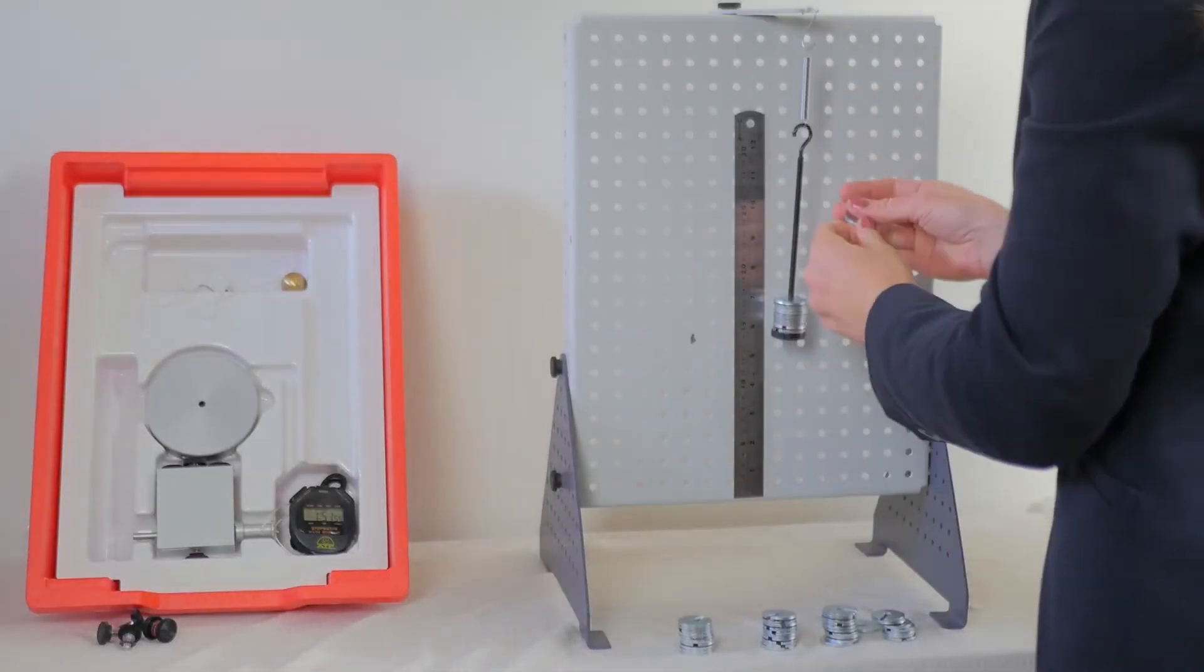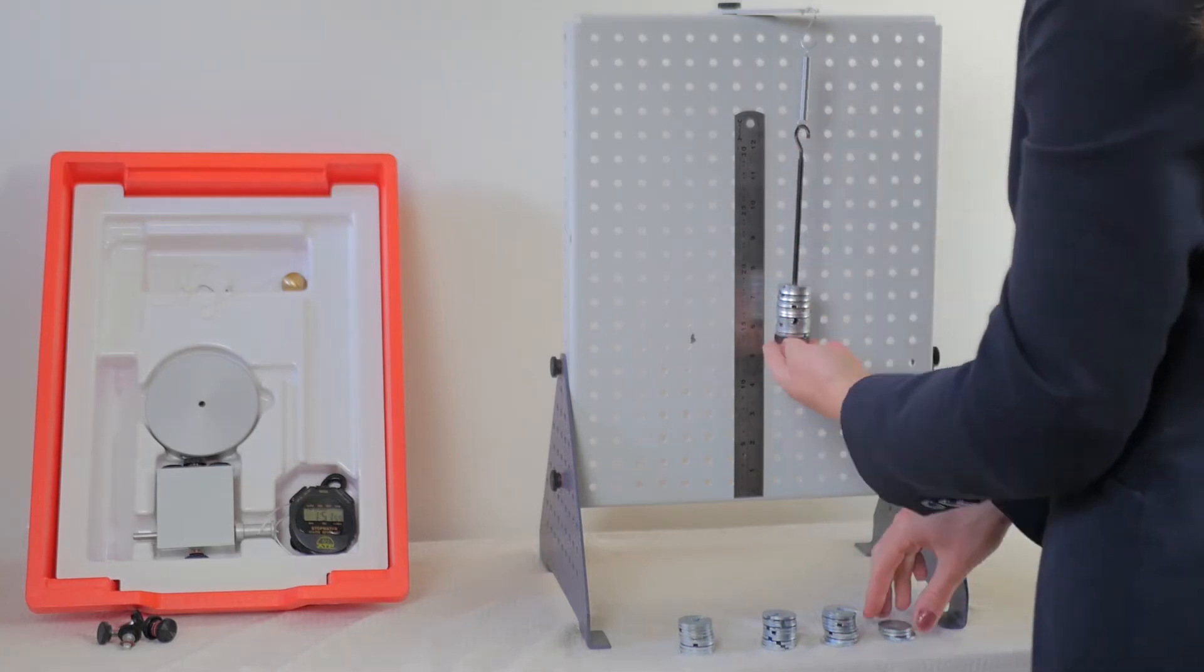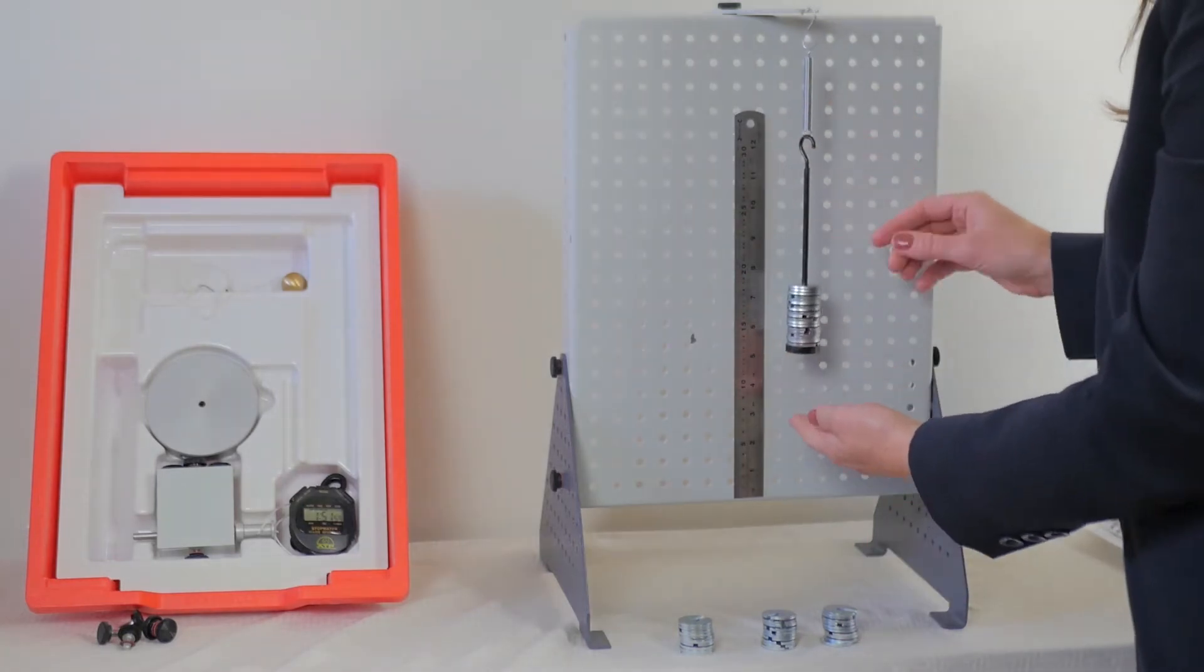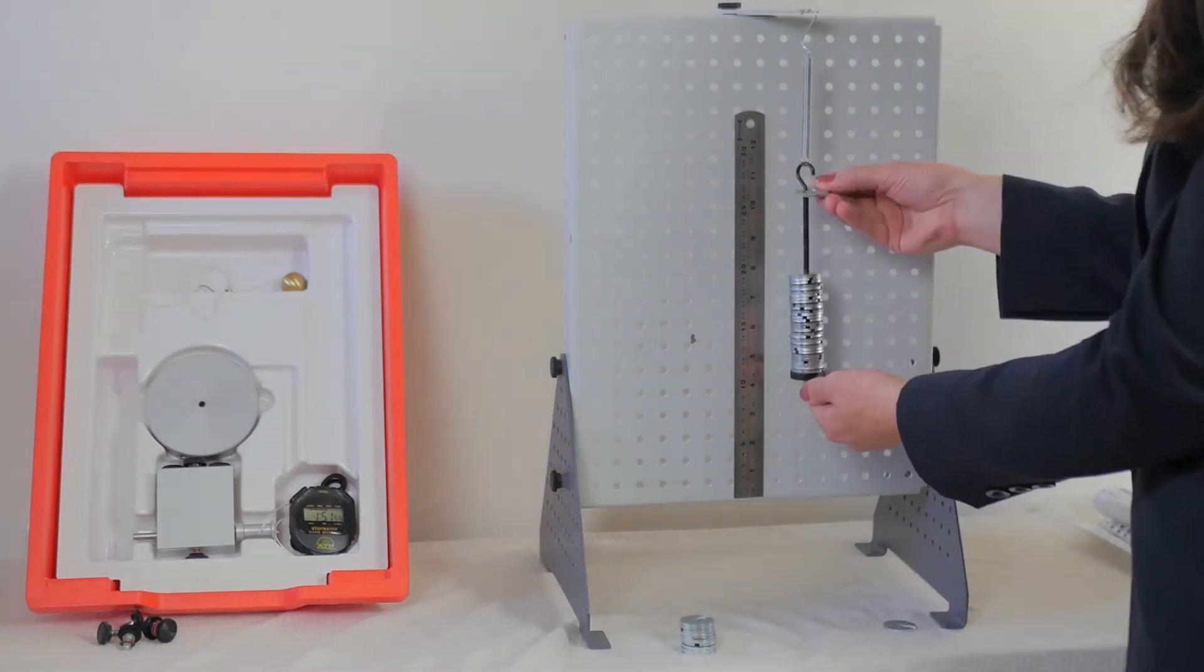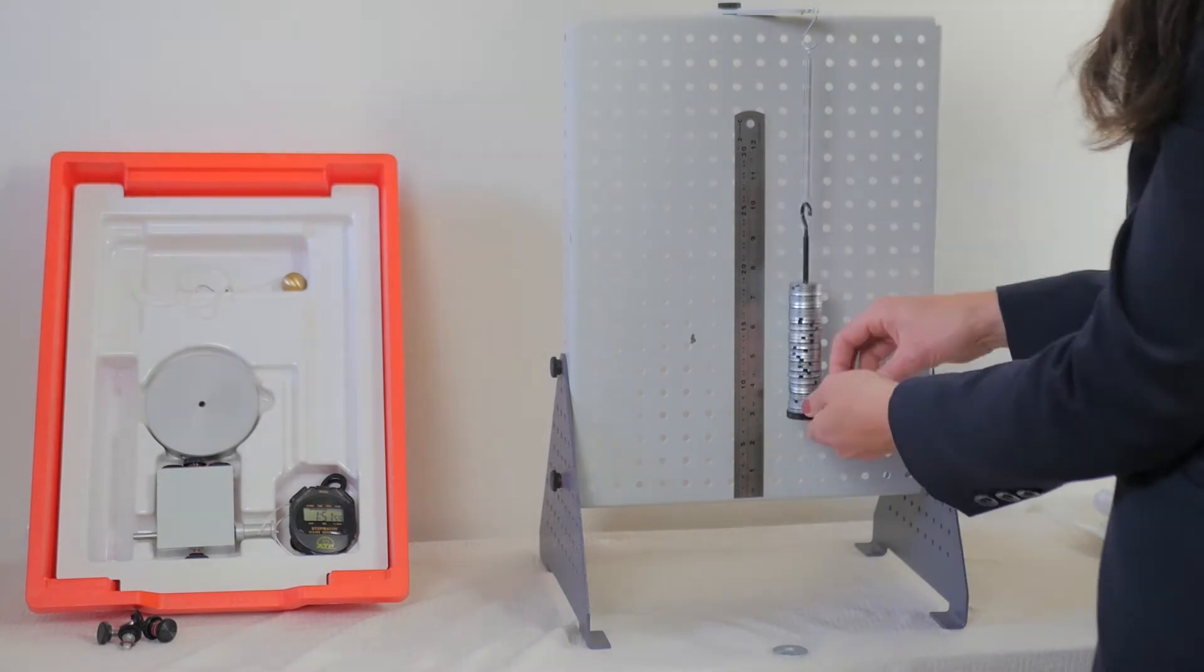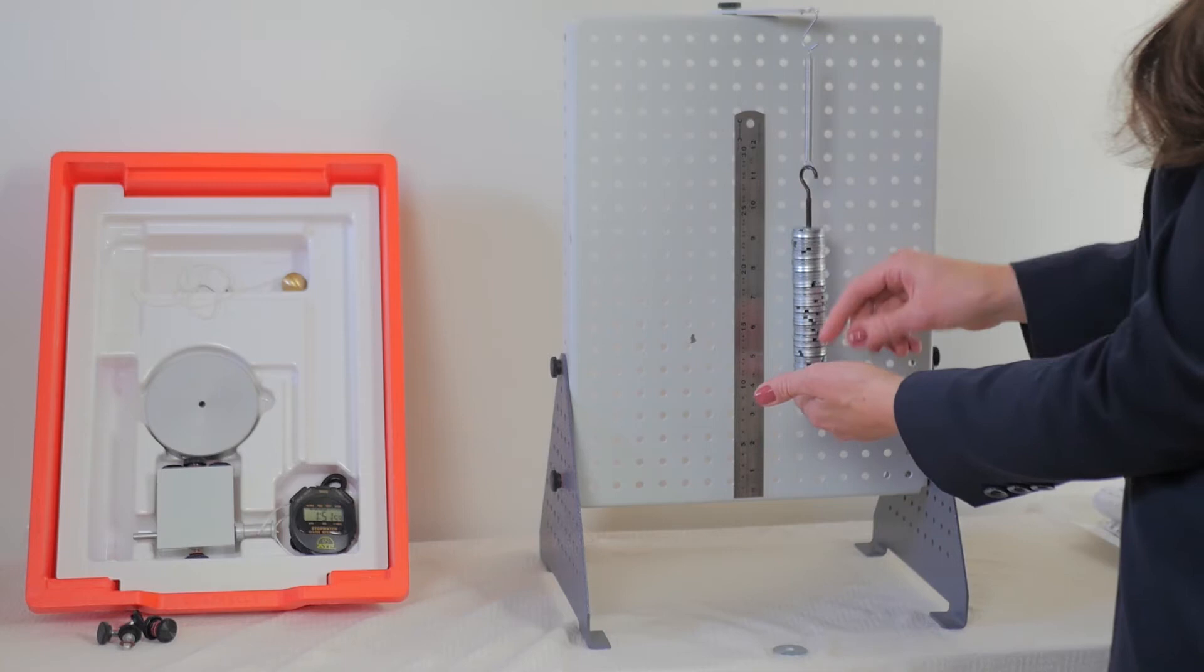A spring is mounted on the frame. You add weights to the weight hanger from 100 grams through to 500 grams attached to the end of the spring and measure the load. Then, take the scale reading from the magnetic ruler and calculate the extension. Plotting the data on a graph allows you to look at the gradient and examine the load and extension relationship.